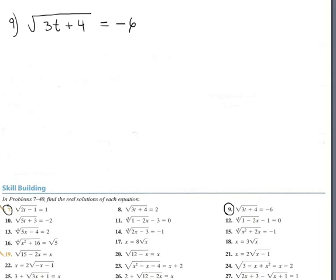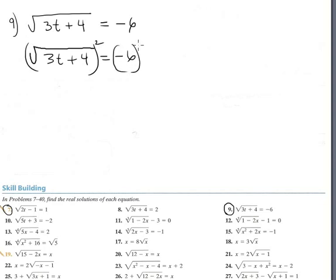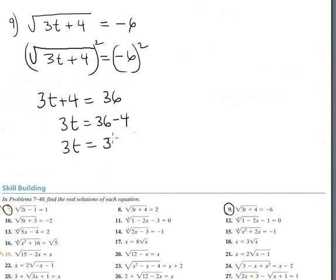Okay, number nine. This one is a little weird because the square root equals a negative number. A square root always produces positive numbers, so I suspect there is no solution. But let me try: squaring both sides of square root of 3t plus 4 equals negative 6 gives 3t plus 4 equals 36, so 3t equals 32, and t equals 32 over 3.